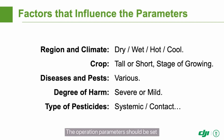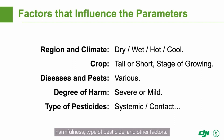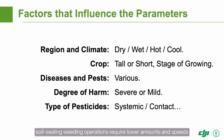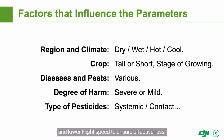The operation parameters should be set after considering the region, crop, type of disease or pest, harmfulness, type of pesticide, and other factors. No one set of parameters is suitable for all operations. Taking a rice field as an example, soil sealing weeding operations require lower amounts and speeds, while stem and leaf application weeding requires higher spraying amount and lower flight speed to ensure effectiveness.